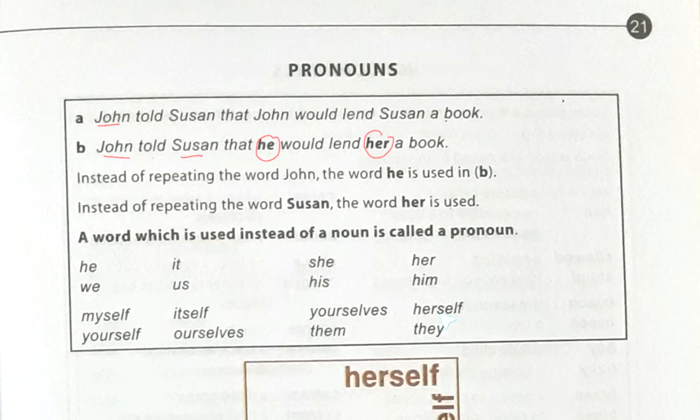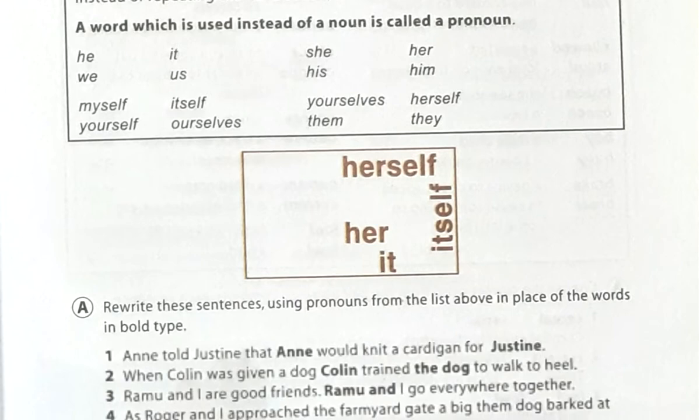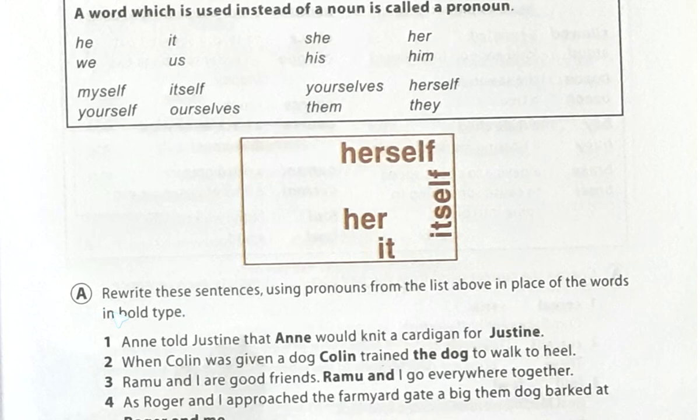Besides these, there are: myself, yourself, itself, ourselves, yourselves, them, herself, they. After reading this, we have two exercises. The first exercise is A. Here it says: rewrite the sentences using a pronoun from the list above in place of the words in bold type. This is a very easy exercise. Let's start.